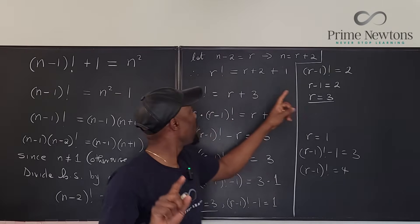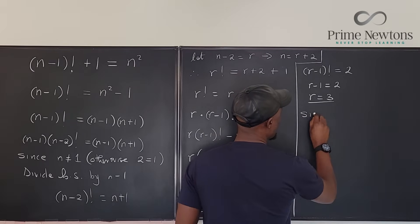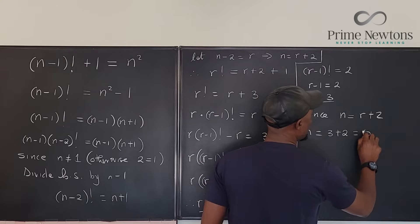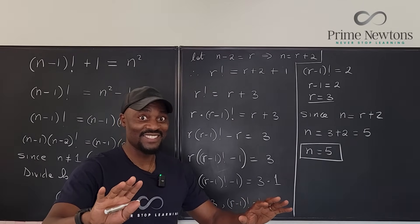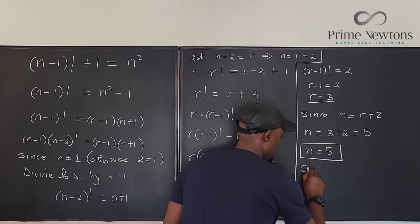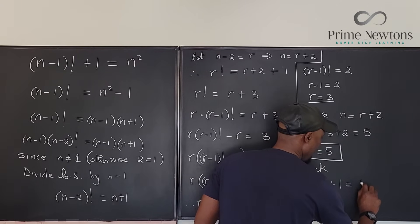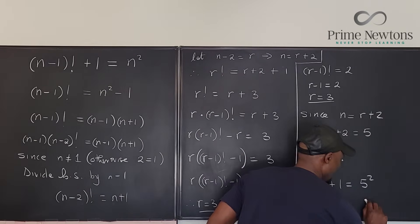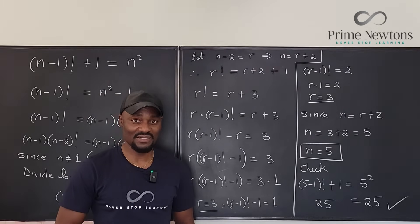So the only solution is r=3. Since n = r+2, we get n = 3+2 = 5. Let's verify: (5-1) factorial + 1 = 4! + 1 = 24 + 1 = 25, and 5² = 25. Check! n=5 is the only solution. Never stop learning — those who stop learning stop living. Bye!